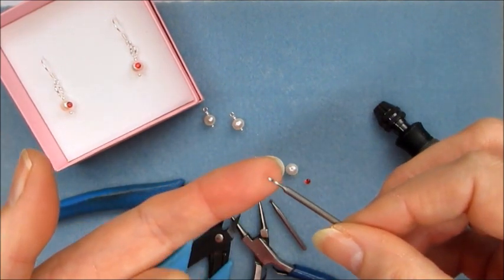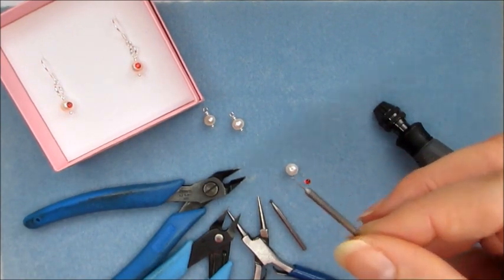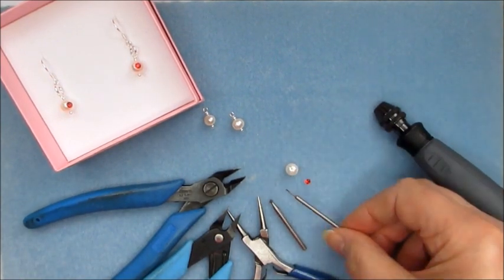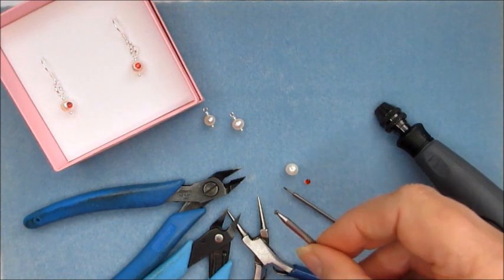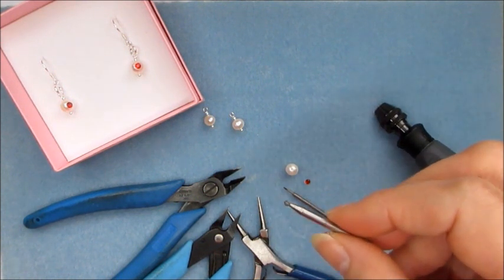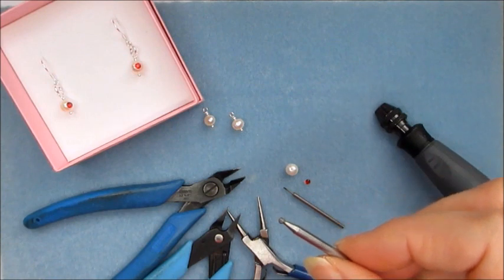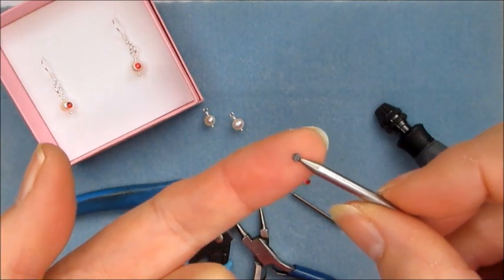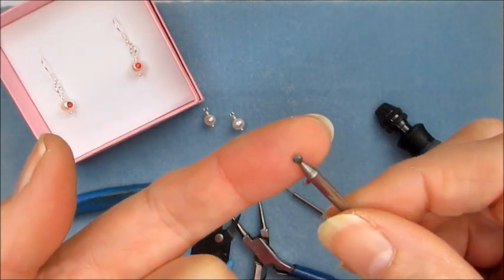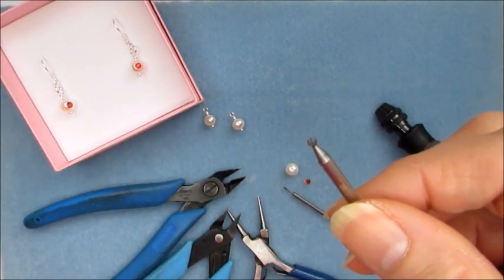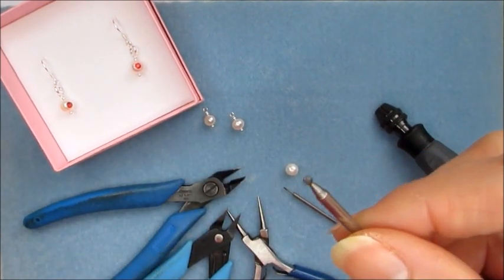You don't want to damage your pearl, so you want to take it really slowly. Because the Swarovski is a 3 mil round, what we need to do is extend that drill hole. So I'm actually using a round burr.